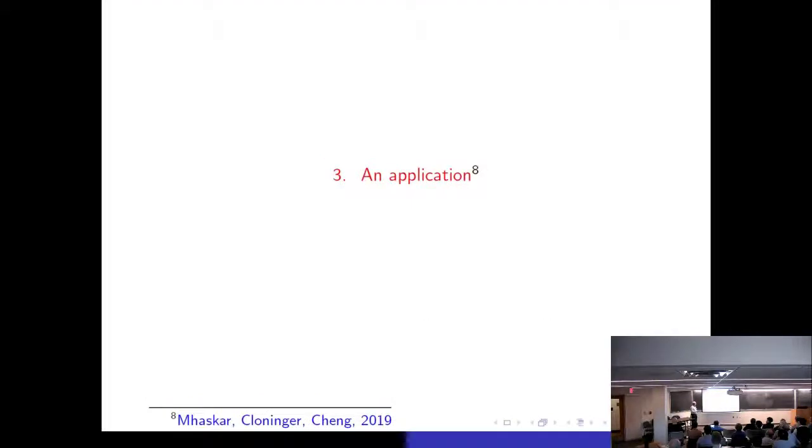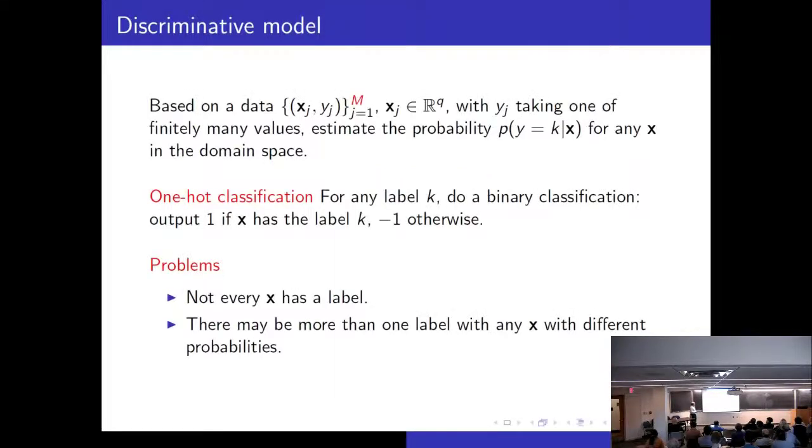So here is one application which together with Alex Kloninger and Xu Cheng from Duke University. Alex Kloninger I think you know very well. He was at University of Maryland and now he is in UC San Diego. So we wanted to build a discriminative model. We have data here and we are looking at a classical classification problem. So we are looking at the probability that if we are given an X, then the Y has the class K.